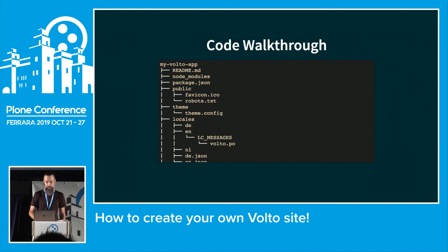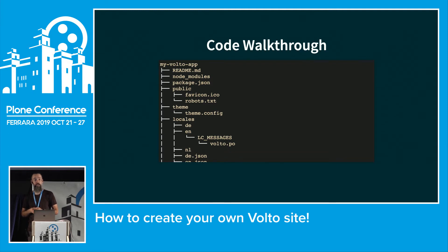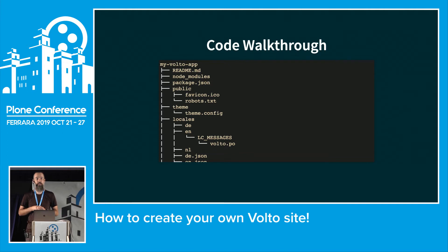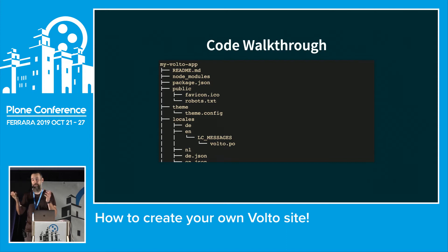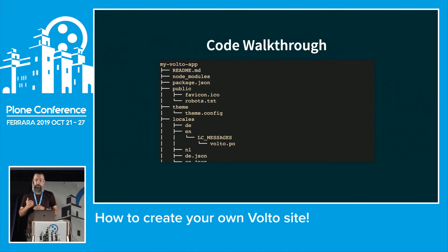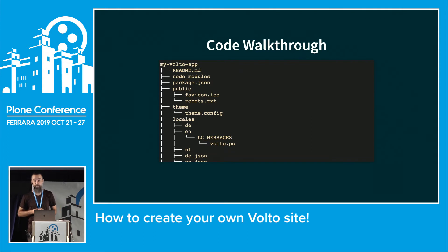As you'd expect from a good CMS, everything will be translatable. The locales folder is there for this. Everything in Volto is currently translated in English by default, with German and Dutch as well. If you want to add translations, feel free to join the sprint or submit pull requests. The locales folder is also where you do translations for your own project's custom views.